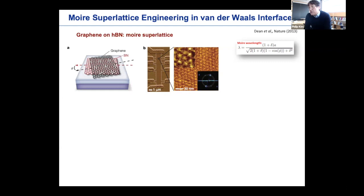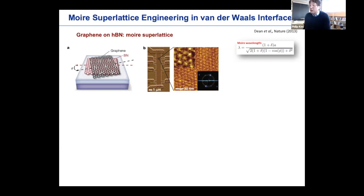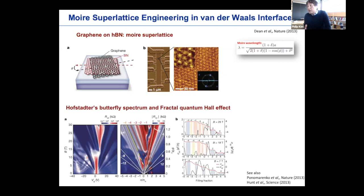Probably the first demonstration of moiré superlattices doing something comes in the very first demonstration of graphene on boron nitride, which appeared about seven or eight years ago. That simple system even led into quite interesting problems, such as Hofstadter's butterfly, seemingly based on the competition between the periodic moiré lattice engineered at something like a 10 nanometer length scale, with a magnetic field whose magnetic length can also be about 10 nanometers. That's where the natural competition of two different length scales plays a quite important role.